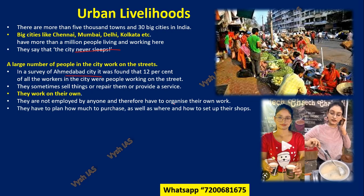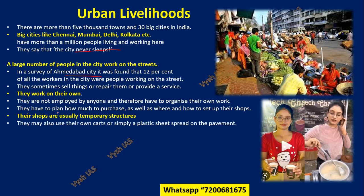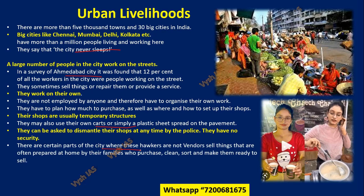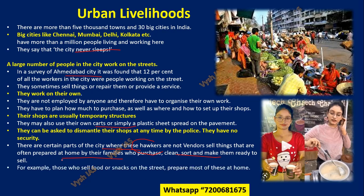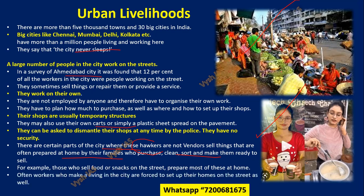This is essentially the unorganized sector — there is no common model everyone follows. They have to plan how much to purchase and where and how to set up their shop. Their shops are usually temporary structures — simply a canvas that can be immediately dismantled, or a cart, or a plastic sheet spread on the pavement. Police can sometimes ask them to dismantle, or corrupt police may demand money to let them continue. These hawkers, also called vendors, often sell things prepared at home — making the base products at home and just finishing or mixing them on the street.